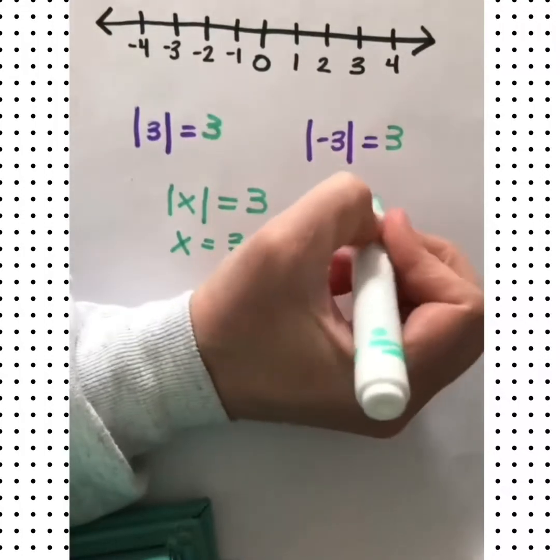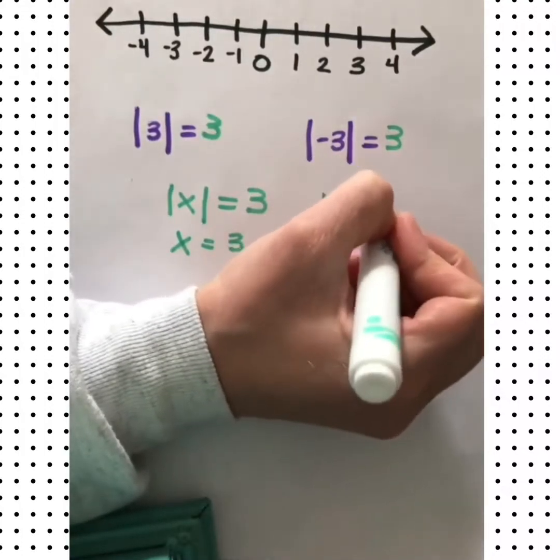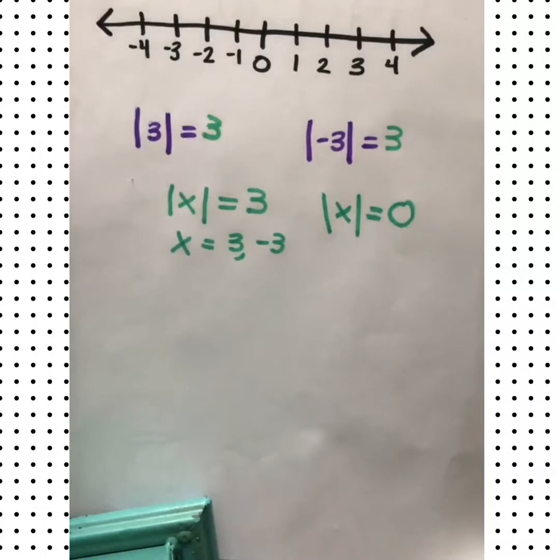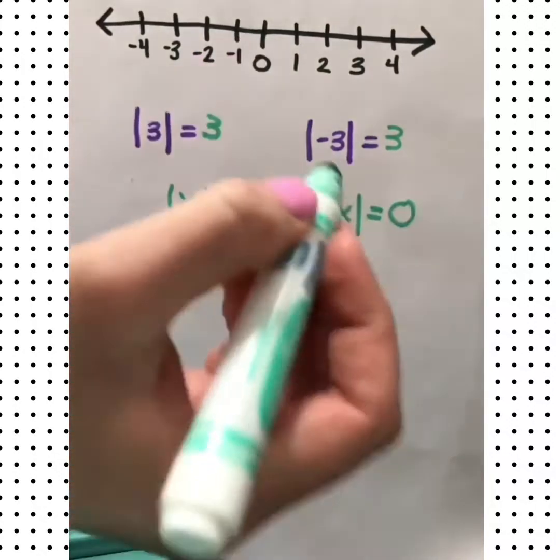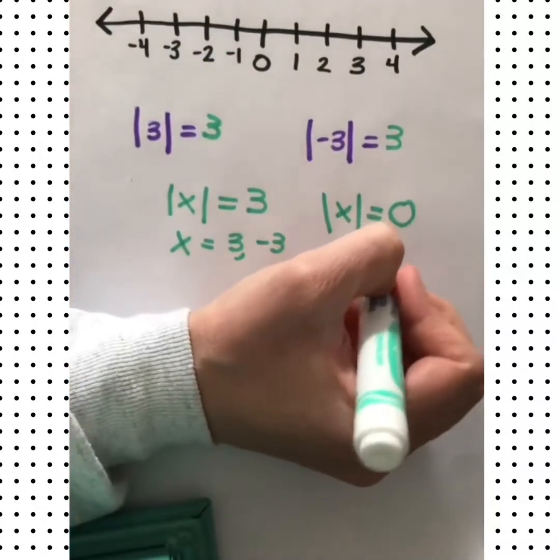The only time you won't is if you have something like this: the absolute value of x equals zero. Well in that case, the only solution we have is zero.